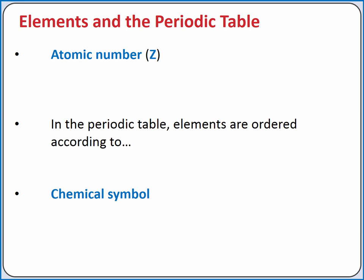Each element also has a chemical symbol representing the element. The chemical symbol can be one or two letters. The first letter is always capitalized, and the second letter, if it's present, is lowercase.